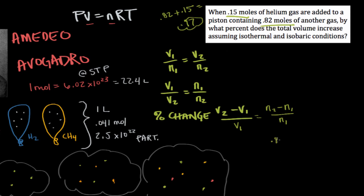Let's substitute these values in. Our final moles is 0.97 minus our initial moles, which is 0.82, divided by our initial moles. That's going to give us 0.15 divided by 0.82. Now we're at a point where we can solve this and evaluate this expression, and that would give us the percent of the total volume increase.